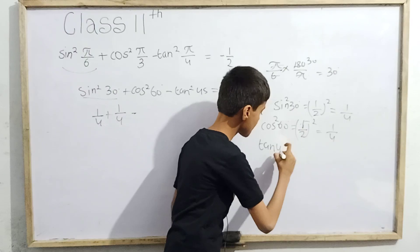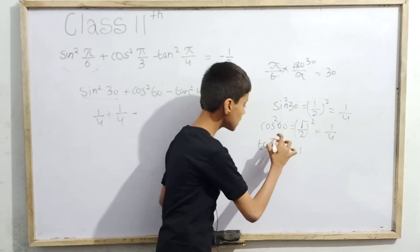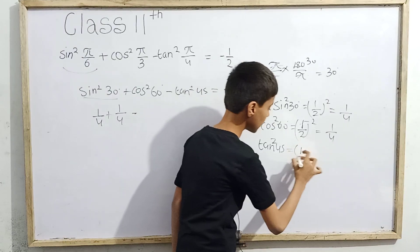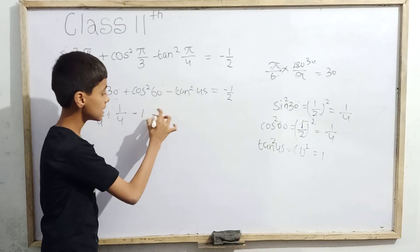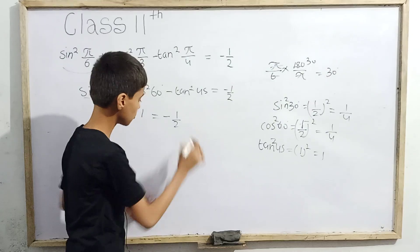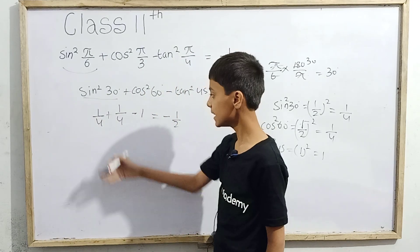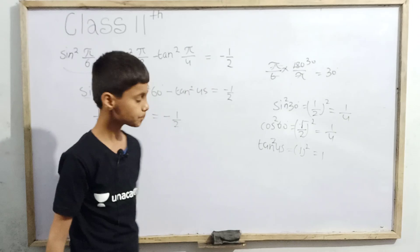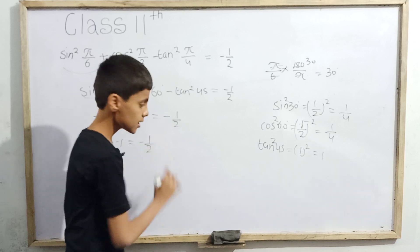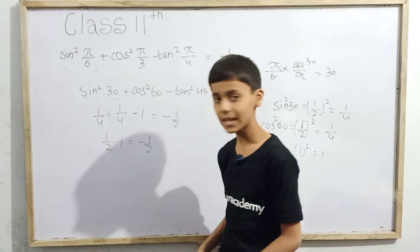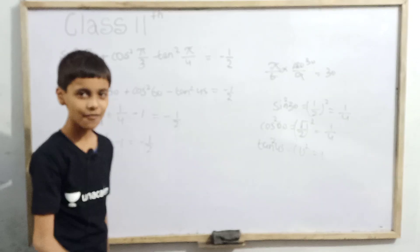Now tan(45°) = 1, so tan²(45°) = 1² = 1. So we have 1/4 + 1/4 − 1. Now 1/4 + 1/4 = 2 × (1/4) = 1/2. So this becomes 1/2 − 1, which equals -1/2. We have proved that this equals -1/2.